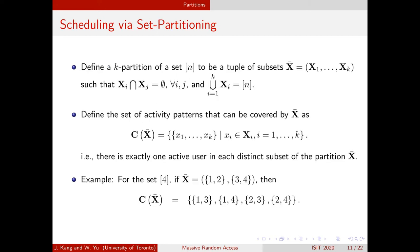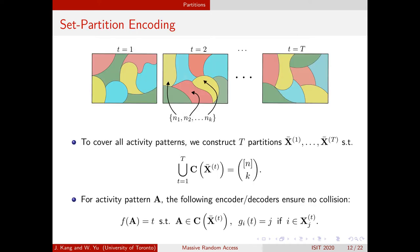We define a K-partition of the index set to be a tuple of disjoint subsets whose union is the index set. We define the function C(X) as the set of activity patterns which have exactly one user in each subset of the partition. For a simple example with four active users, this partition of the numbers one through four yields four different activity patterns that each have exactly one user in each subset — these four patterns make up the set C(X). If an activity pattern is in C(X), we say the partition covers that activity pattern. We will devise an encoding and decoding scheme using these partitions.